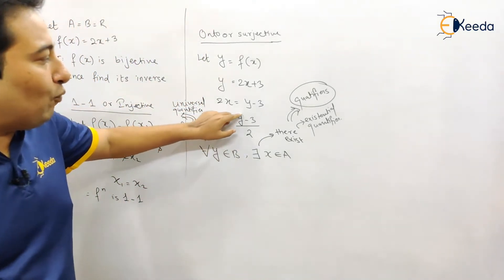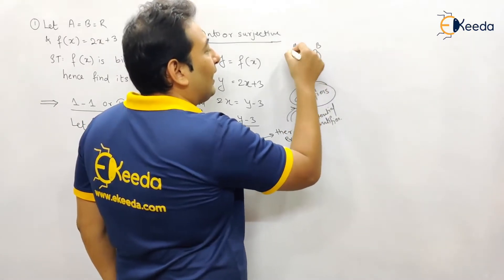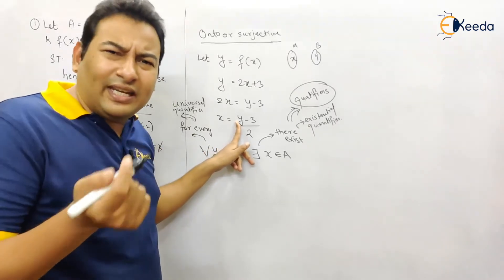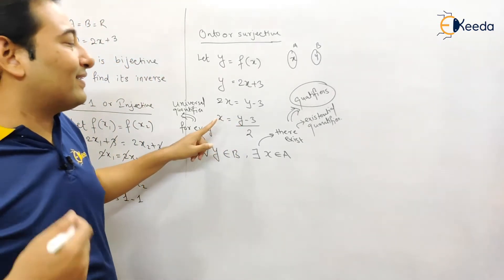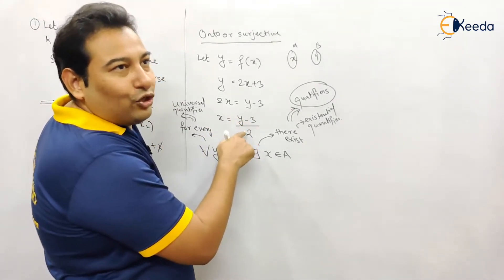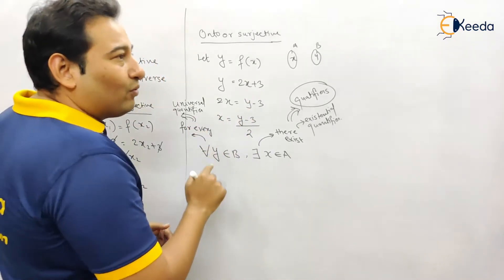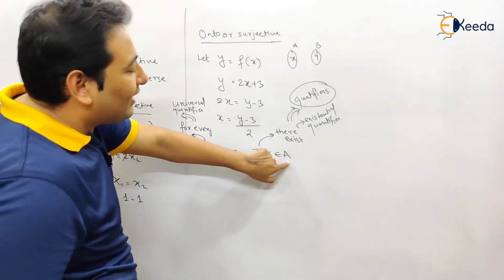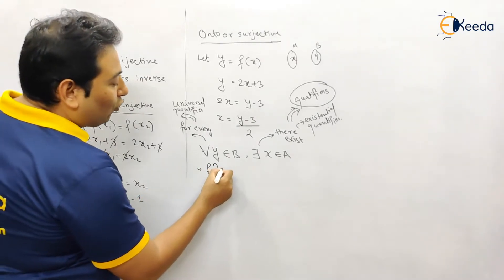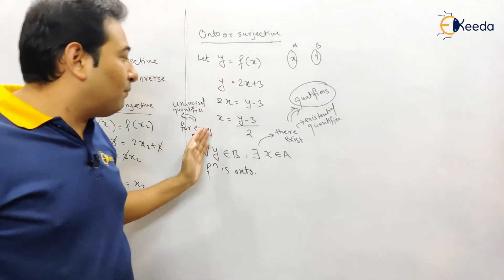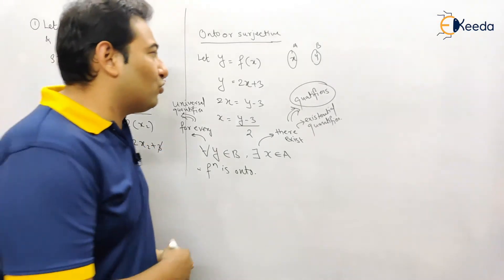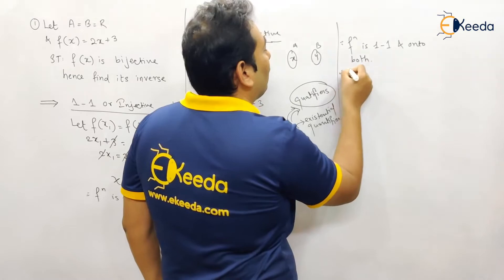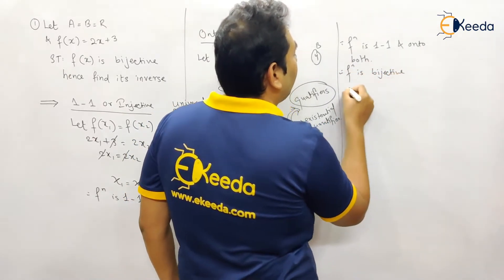Onto means: for every element y in B, there should be a corresponding x in A. If you put any value of y — say 0, 1, 2, 3, or a negative — you will get some x. For example, y = 1 gives x = (1−3)/2 = −1. So for every y in B, there exists some x in A, therefore the function is onto. Since the function is both one-to-one and onto, the function is bijective and its inverse exists.